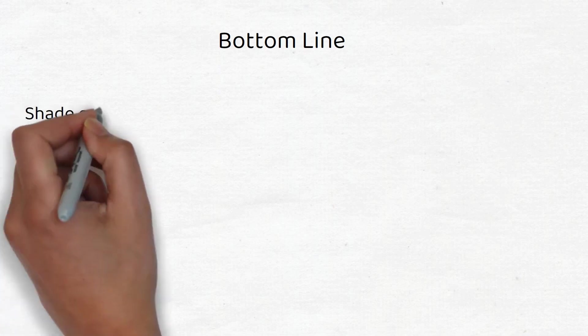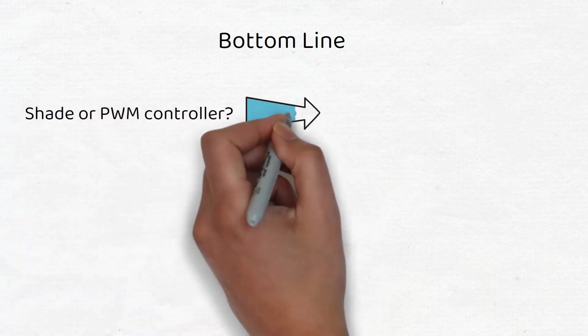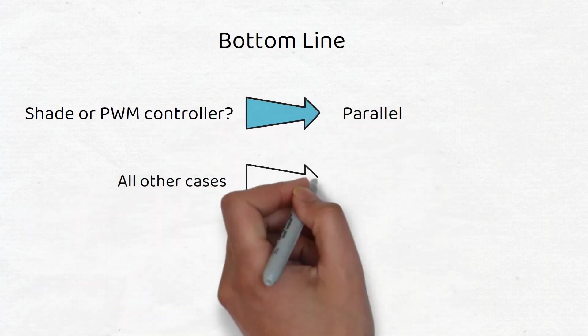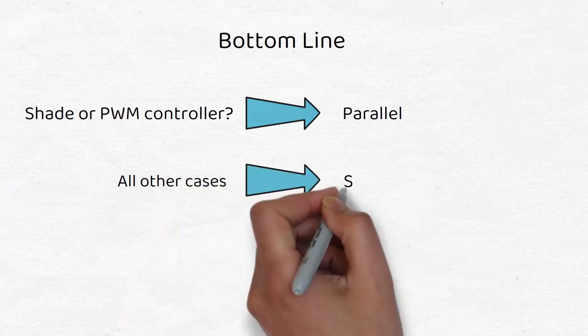Bottom line. If you choose between series or parallel, you have to keep in mind the shading conditions and the type of charge controller you are using. If you expect shading or use a PWM charge controller, choose parallel. In all other cases, go for a series connection.